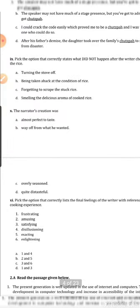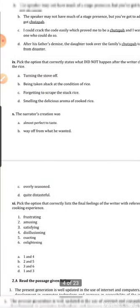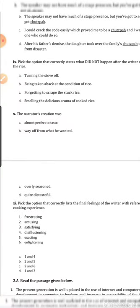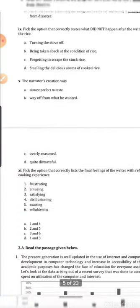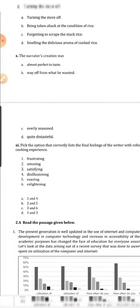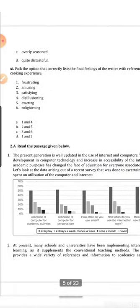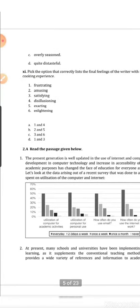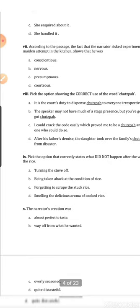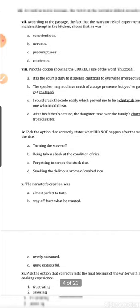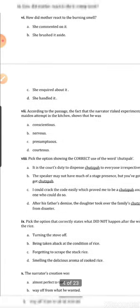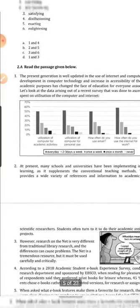Question 9 — 'Pick the option that correctly states what did NOT happen after the writer checked on the rice' — a direct question with one wrong option among four. Question 10 — about the narrator's creation — also very direct. Question 11 — 'Pick the option that correctly lists the final feeling of the writer with reference to the cooking experience' — a very direct question. If any question is confusing, leave it and attempt the rest.